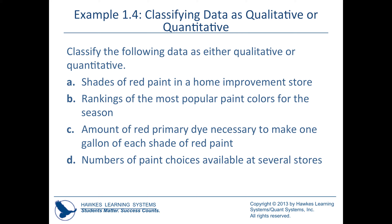Classifying data as qualitative or quantitative: (A) shades of red paint in a home improvement store — clearly qualitative. (B) rankings of the most popular paint colors — quantitative. (C) amount of red primary dye necessary to make one gallon of each shade — clearly quantitative. (D) numbers of paint choices available — also quantitative.